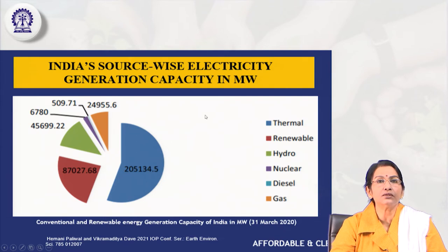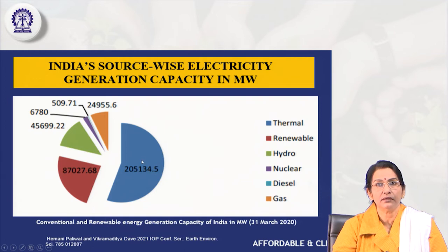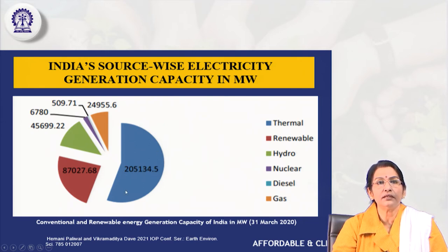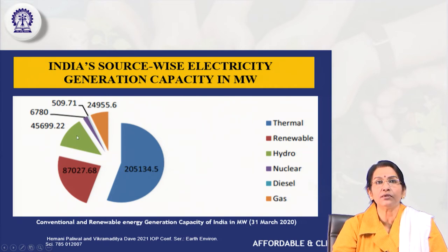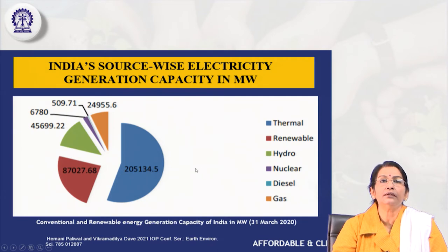Looking at India's energy sources, the source-wise electricity generation capacity shows that the largest portion comes from thermal sources, primarily coal. The next portion is from renewable energy, followed by hydro energy from water resources, then around 6–8 gigawatts from nuclear sources, and finally a portion from petroleum gas sources. This is the distribution of India's energy resources used in day-to-day life.